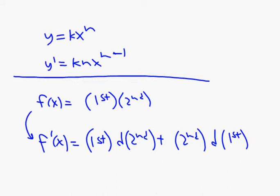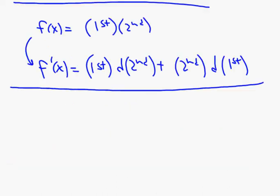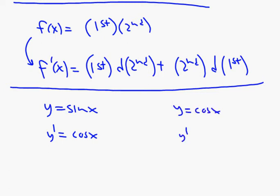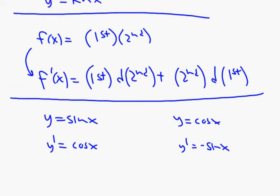What else do we know? We learned how to do the derivative of a few trig functions. For example, if y equals the sine of x, then y prime is cosine of x. And also, if y equals cosine of x, then y prime is negative sine x. That's a summary of what we know so far.